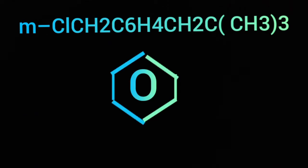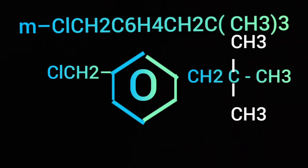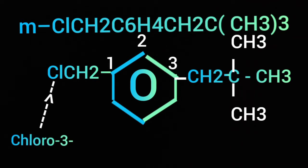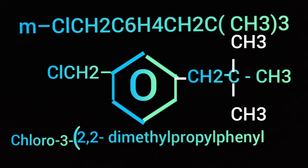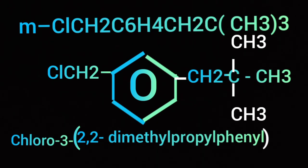That is a benzene ring deprived of two hydrogen atoms. Let us draw a benzene ring in the middle, and at the meta position Cl-CH2 is there, and CH2-C(CH3)3 is connected. The IUPAC name could be: chloro-3-(2,2-dimethylpropyl)phenyl methane.